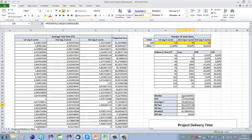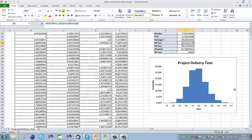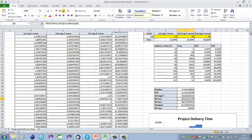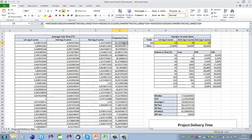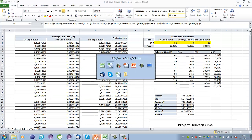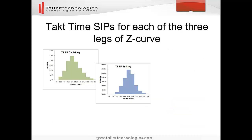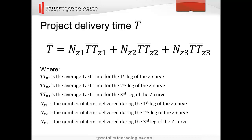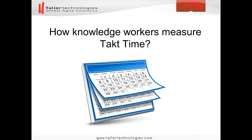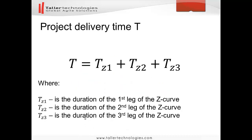We will be using the 85th percentile as our delivery plan, and here we can see the distribution of the simulated delivery time. How do we actually simulate the new project? The delivery time of the project can be calculated by summing up the duration of the first leg of the z-curve, plus the duration of the second leg, plus the duration of the third leg. That is what we will be doing.